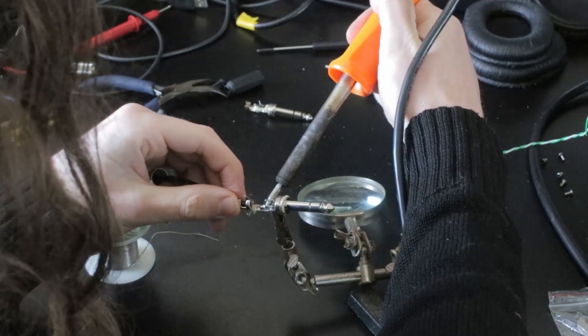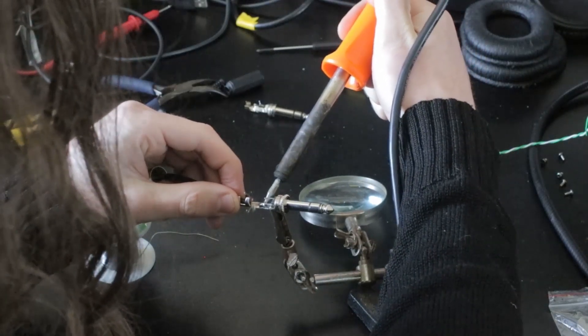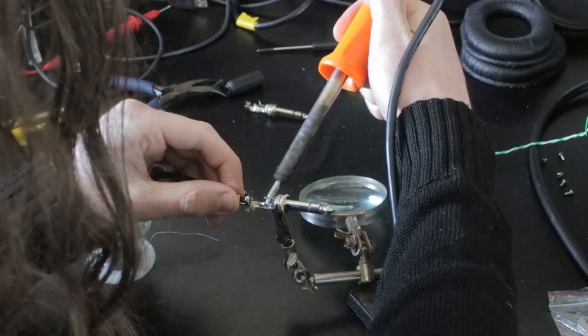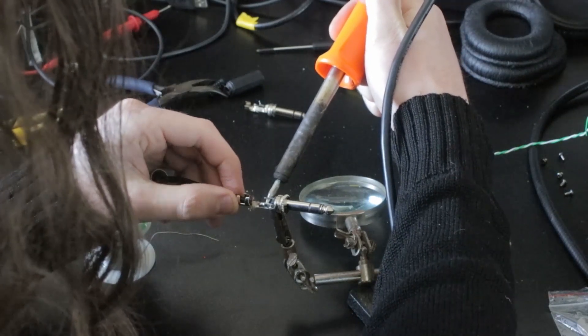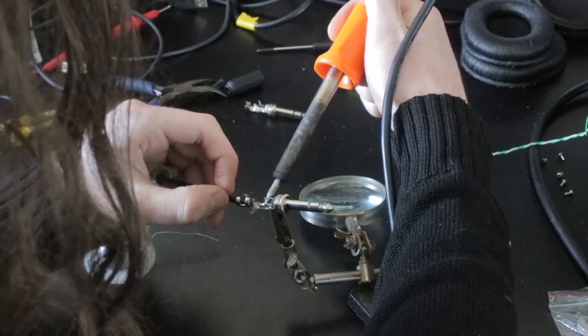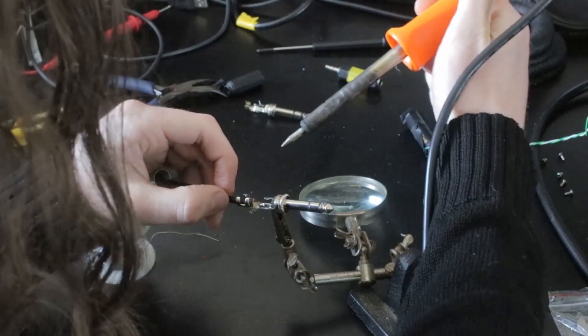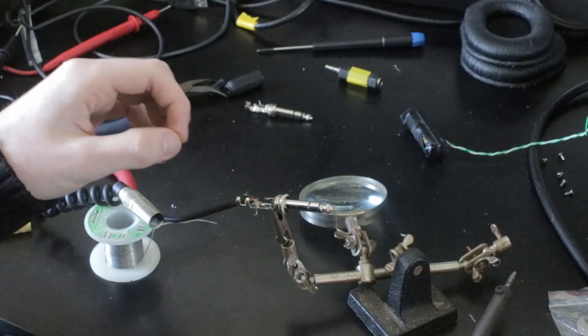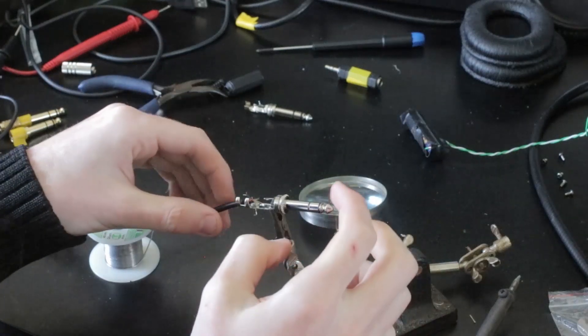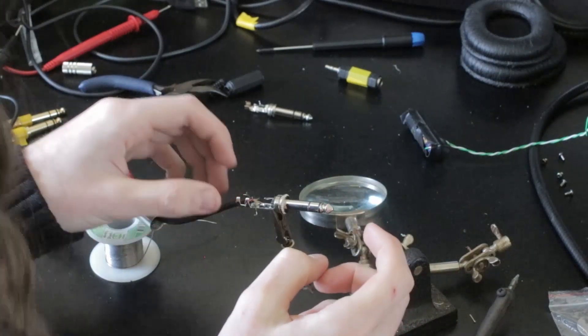So now that there's solder on both bits of the metal, now when we apply the heat, that will just melt into each other. Watch your fingies. Ta da! One.